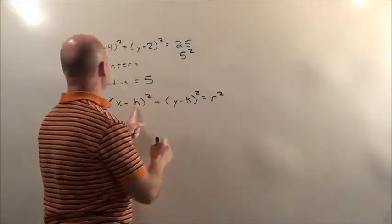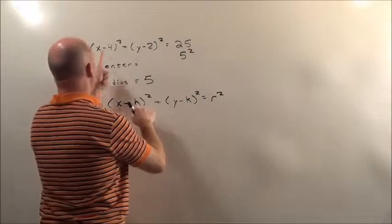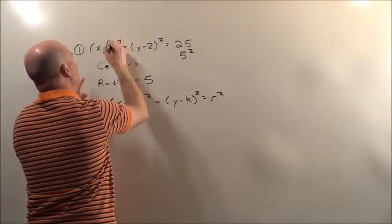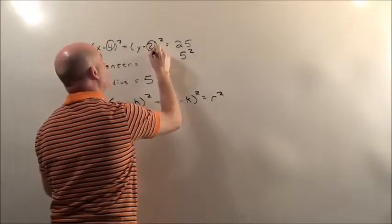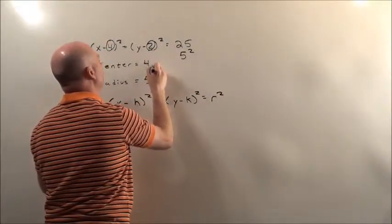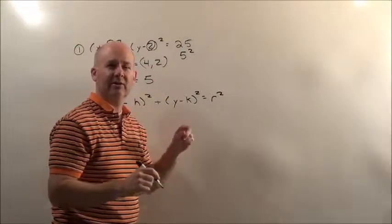As far as our center, remember this is minus h. So since it's minus 4, that's a 4. And it says minus 2, there's our k value right there of 2. So it's 4, 2. That's going to be our center.